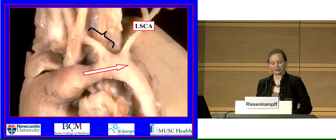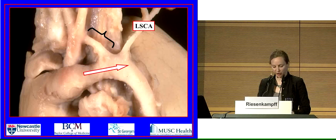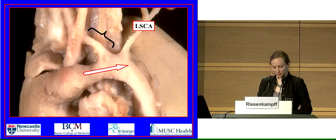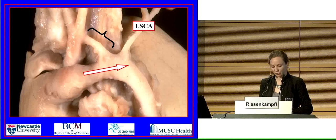The arrangement of the subclavian artery is another variable in the setting of extrapericardial obstruction. When the arch is interrupted, one of the subclavian arteries often takes a retroesophageal course.